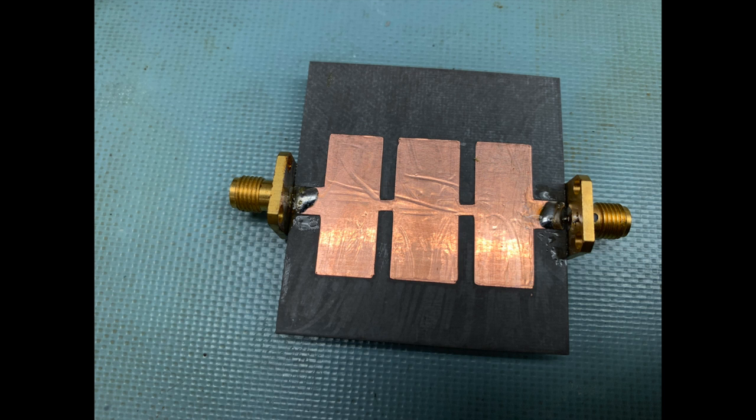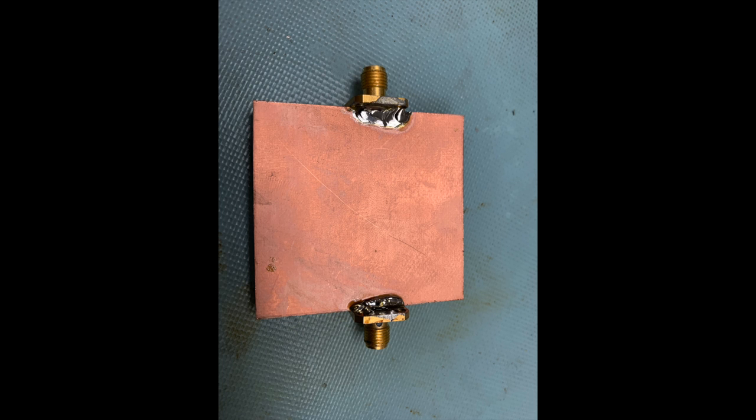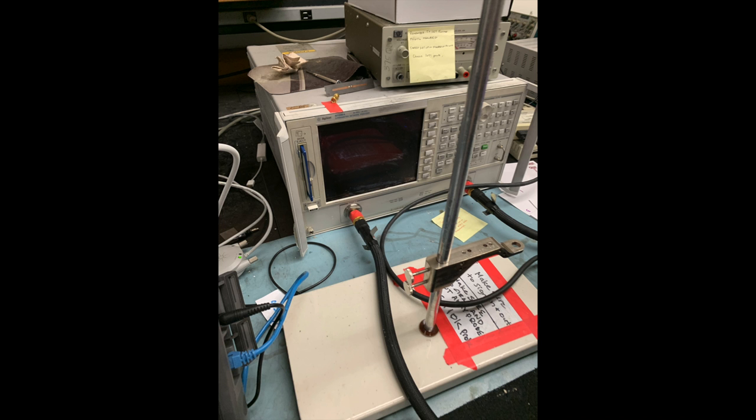Next, we solder on the SMA connectors starting from the side that has our copper tape, then the back side. Before taking measurements of the filter, we first need to calibrate the network analyzer.